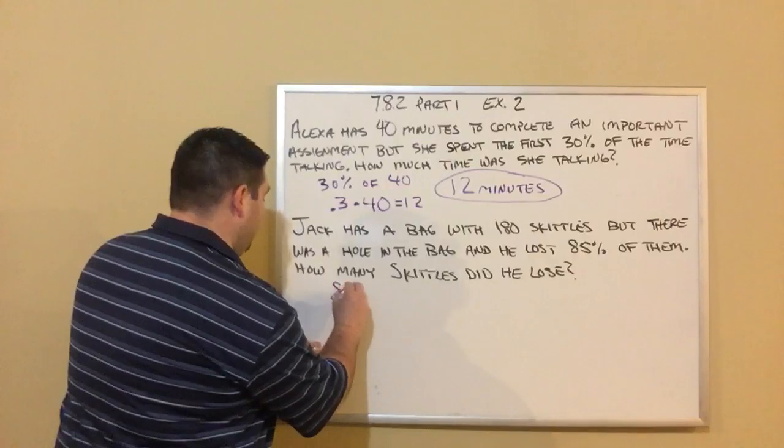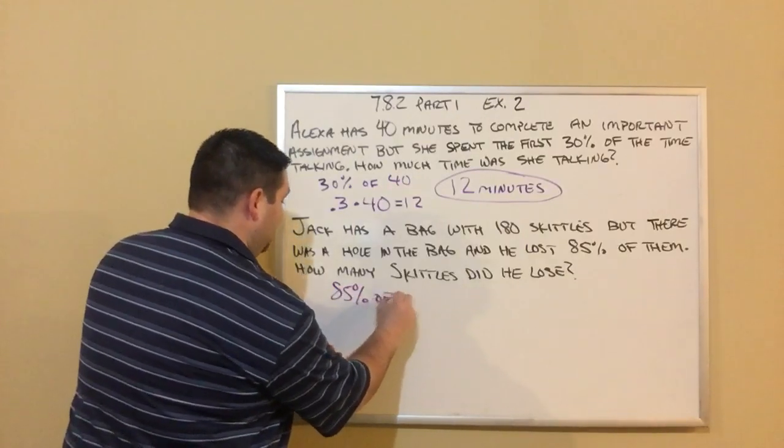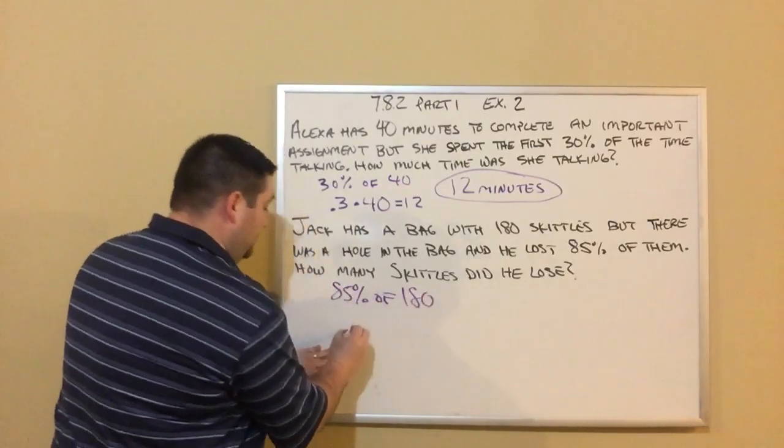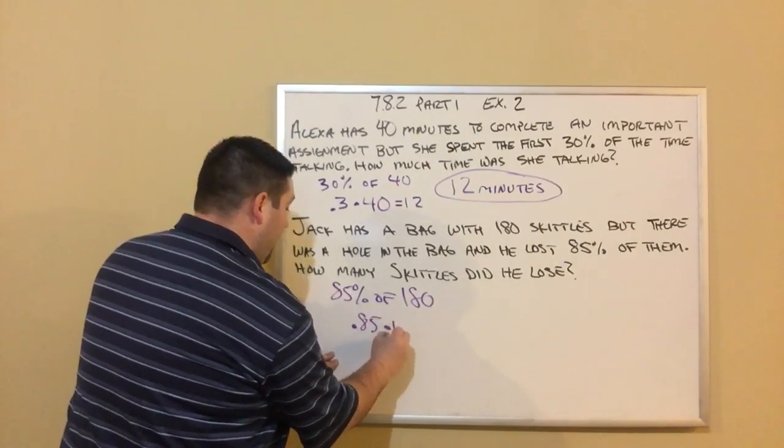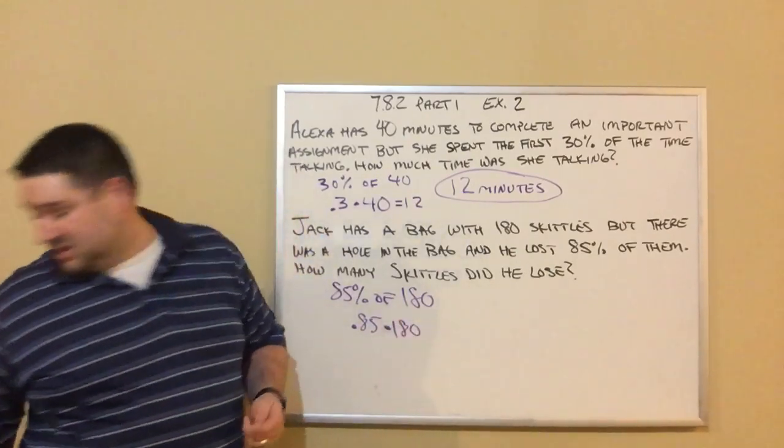So 85% of 180. I can make 85% into a decimal. So 0.85 times 180. So we're just going to do that math.